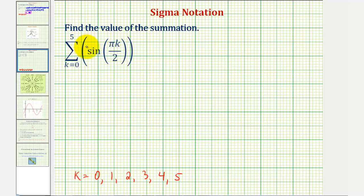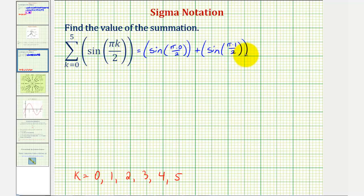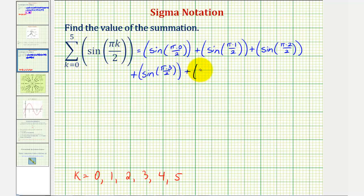Once we find each of the values from this expression for the different values of k, we'll then find the sum of those values. When k equals zero, we have sine of pi times zero divided by two. Then k equals one gives plus sine of pi times one divided by two; k equals two gives plus sine of pi times two divided by two; k equals three gives plus sine of pi times three divided by two; k equals four gives plus sine of pi times four divided by two; and finally k equals five gives plus sine of pi times five divided by two.